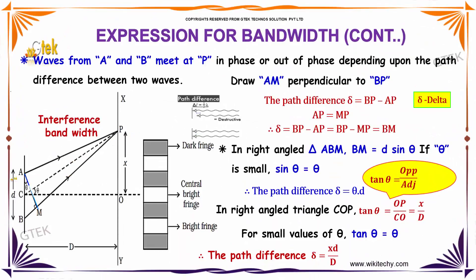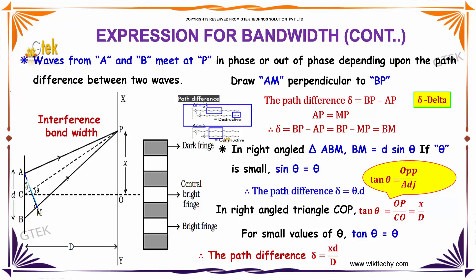Waves from a and b meet at P in phase or out of phase depending upon the path difference between the two waves. You can see this has a phase change and phase non-uniformity. Over here we have uniformity. So this is called constructive interference and this one is destructive interference. I am trying to draw AM perpendicular to BP.